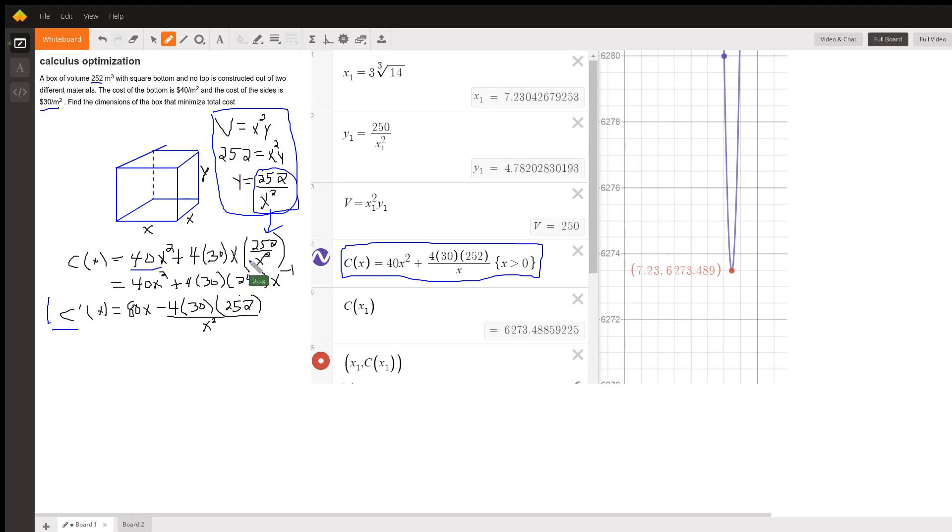And you could get an exact value for y by substituting that right here. On Desmos, I just said x sub 1 is 3 times the cube root of 14, about 7.23 meters. Y sub 1 would end up being about 4.78 meters. And if I put the x sub 1 into the cost function, I see it's going to cost about $6,273.49 to build this pretty expensive box.